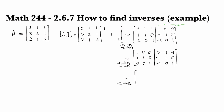And so I'll have 1 0 0 3 minus 1 minus 1, and 0 0 1 minus 1 0 1 as before. And then subtracting the first row from the second, I get 0 1 0 on the left, which is what I want, and minus 4 2 1 on the right.